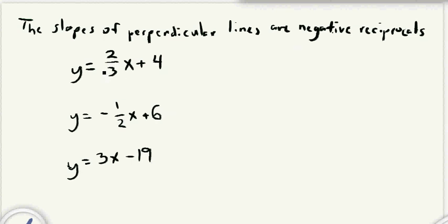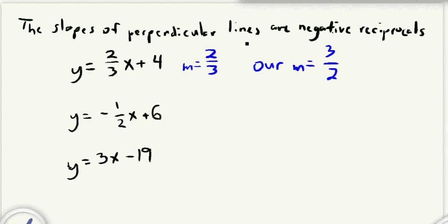Starting with the first example, we need to figure out what the slope is. All of these are going to be in y = mx + b form, so all we have to do is figure out what our m is. In this case, the slope of this line is 2/3. So we're going to flip that, going from 2 over 3 to 3 over 2. And since this one's positive, it's going to become negative. So the slope of the line that's perpendicular to this one is negative 3 over 2.